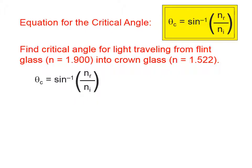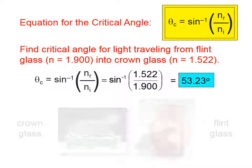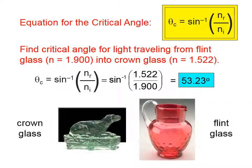Let's find the critical angle for light traveling from flint glass into crown glass. Flint is the incident medium, so its index of refraction of 1.9 goes in the denominator, and crown glass, the refracting medium, goes in the numerator. Make sure your calculator is in degree mode, and you get a value of approximately 53.23 degrees.